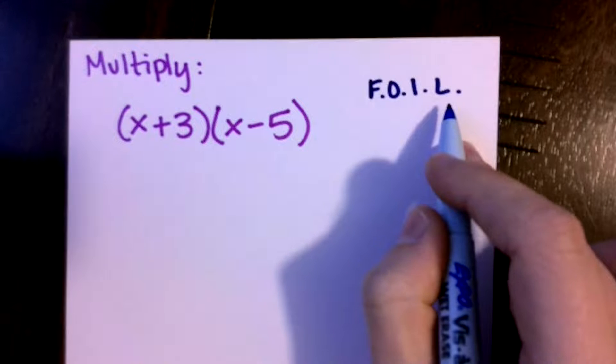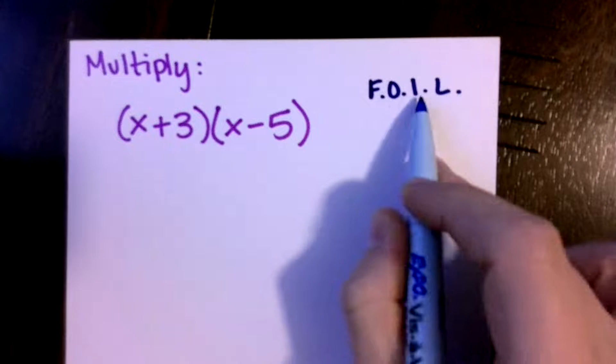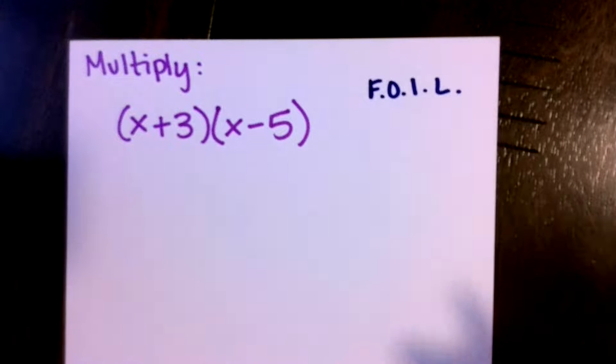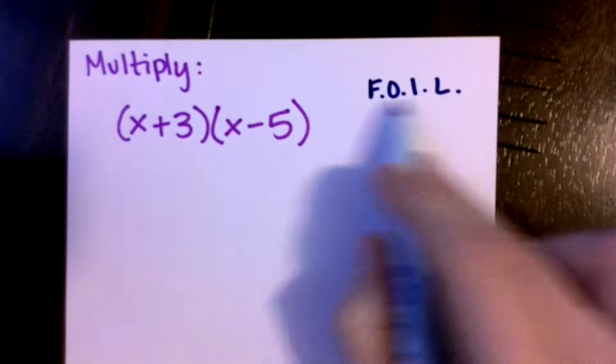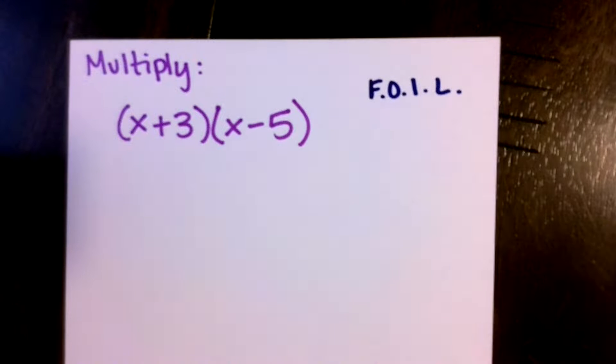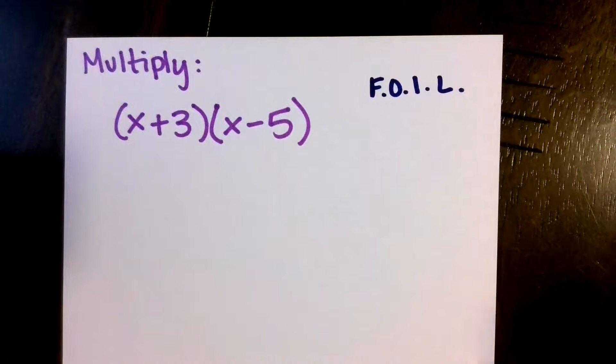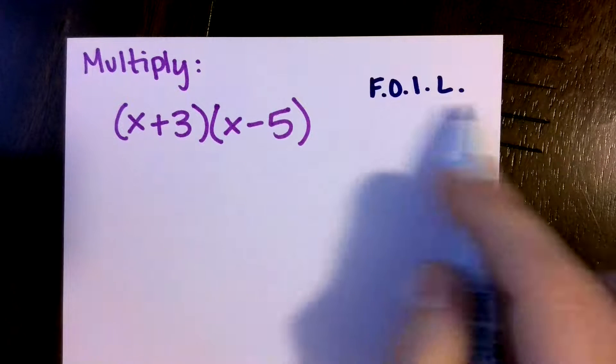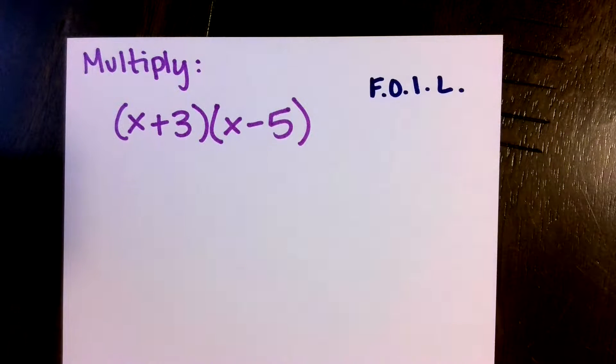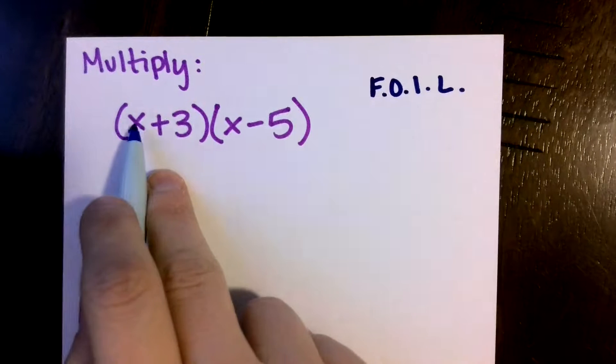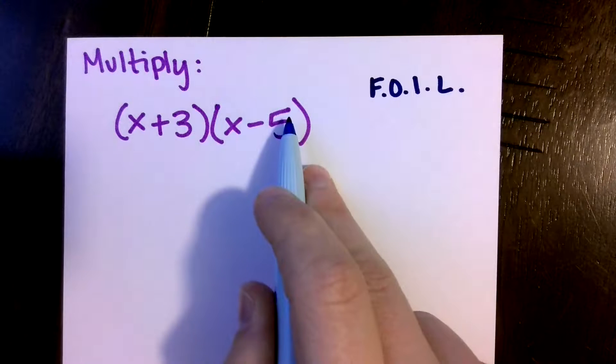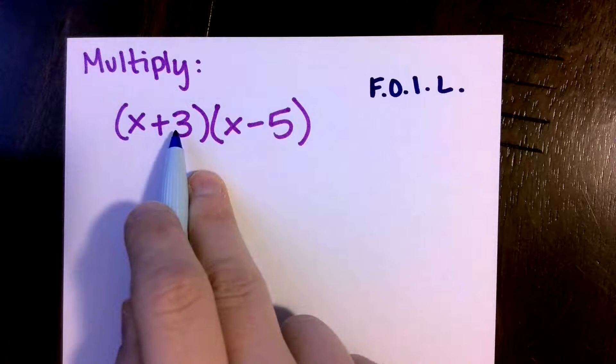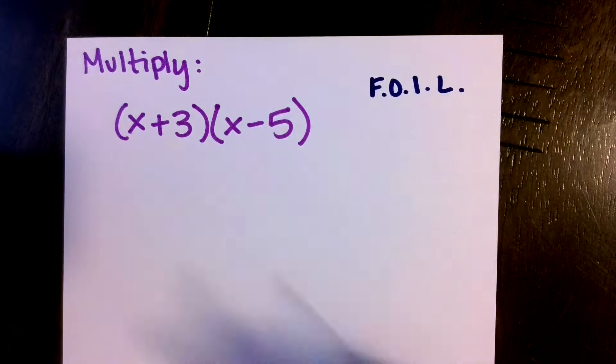You're multiplying the first, outer, inner, and last. What you may not know, because sometimes we hit that FOIL so hard, is that it is not as clear what you're actually doing. This FOIL is just distribution. All you're doing is distributing the x to both terms, the x and the negative 5, and then distributing the 3 to both terms. That's all FOILing is.